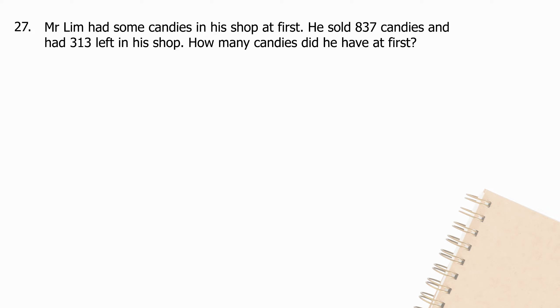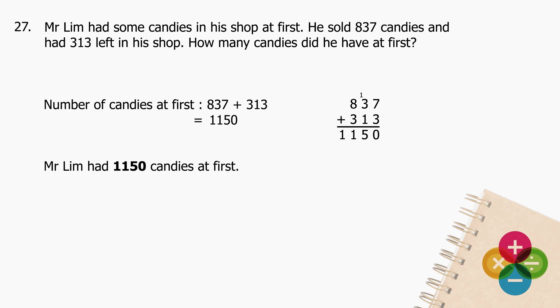Question 27: Mr. Lim had some candies in his shop at first. He sold 837 candies and had 313 left. How many candies did he have at first? Add 837 to 313 and the sum is 1150. Mr. Lim had 1150 candies at first.